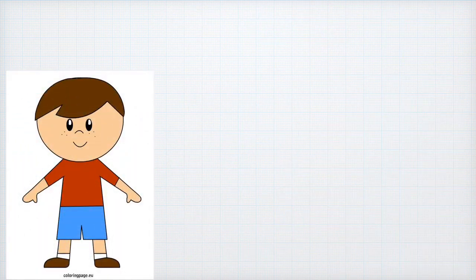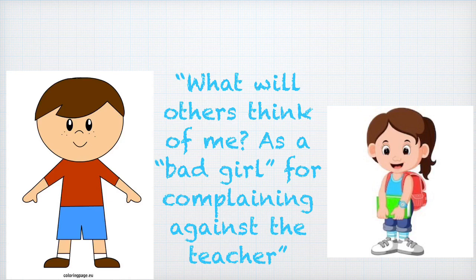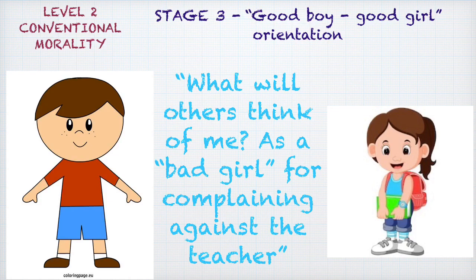Another of Ben's friends thinks, 'What will others think of me as a bad girl for complaining against the teacher?' She is worried about her image in front of other classmates who would think of her as a bad girl for complaining against the teacher. Her response is primarily guided by trying to be a good girl, characteristic of Stage 3, the good boy/good girl orientation, in Level 2 of conventional morality.